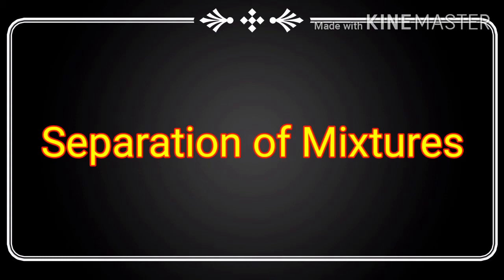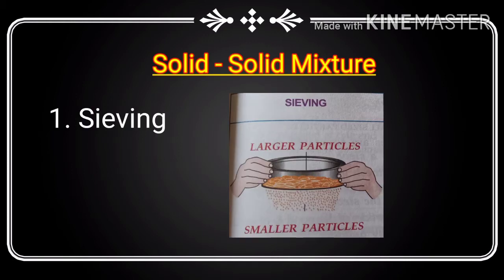First we discuss about the solid-solid mixture and how to separate it. The solid-solid mixture is separated by the process of sieving. This process is based on the principle of difference in size of solid particles. There are two types: large-sized solid particles and small-sized solid particles.